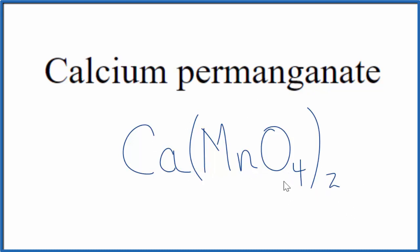If you were given the formula and asked to write the name for Ca(MnO4)2, you need to realize that MnO4 is the permanganate ion, and it's bonded to calcium.